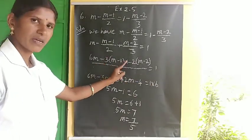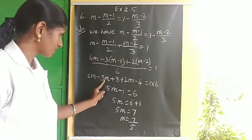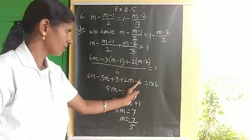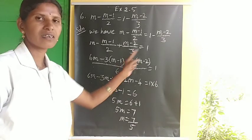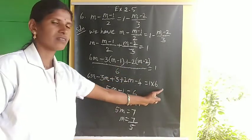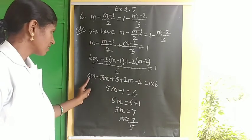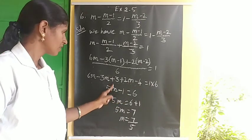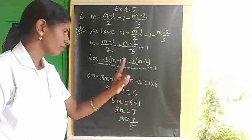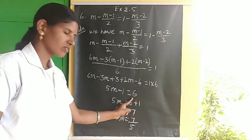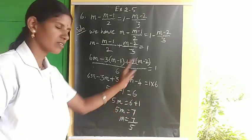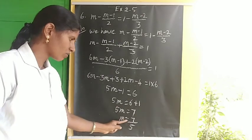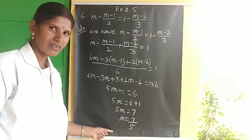Multiplying inside: 6M minus 3M plus 3, plus 2M minus 4, divided by 6, equals 1. The 6 transfers to RHS. M terms: 6M minus 3M plus 2M equals 5M. Constants: 3 minus 4 equals minus 1. So 5M minus 1 equals 6. Therefore 5M equals 7, and M equals 7 by 5. This is the required solution.